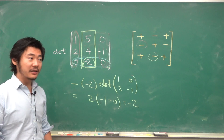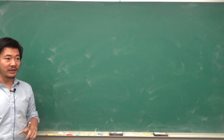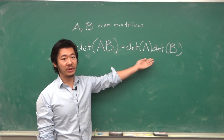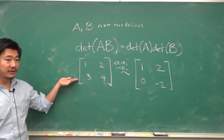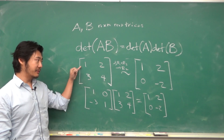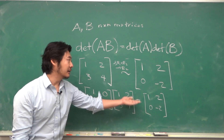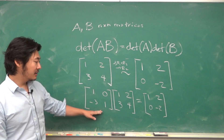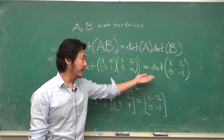What if your matrix doesn't have lots of zeros in the columns or rows? To fix that, we need to know a couple of properties of determinants. The most important is that if A and B are n by n matrices, the determinant of AB equals the determinant of A times the determinant of B. Recall that a row operation — like adding negative 3 times the first row into the second — can be described using elementary matrices, whose determinants are easy to compute. The idea is to do row operations to get more zeros, making the determinant easier to compute.